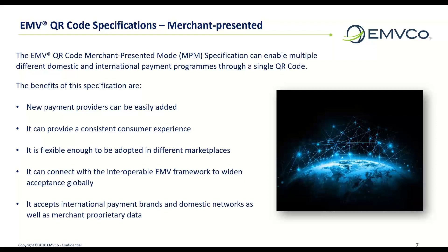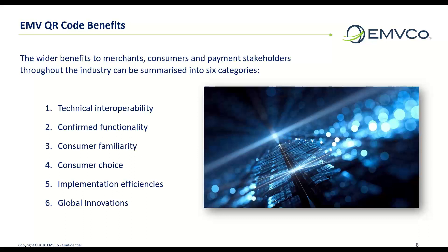It has been adopted by over 30 countries and has been adopted as a national standard by a third of these. The specific benefits of the standard are: new payment providers can be easily added to the QR code; this interoperable acceptance can provide a consistent consumer experience domestically and internationally; it is flexible enough to be adopted in any marketplace; and it can connect with the interoperable EMV framework to widen acceptance globally. A key benefit to merchants is having a single QR code that includes acceptance of international payment brands and domestic networks, as well as merchant proprietary data. The specifications can co-exist with proprietary offerings and support card-based solutions from domestic and international payment programs, as well as account-based, in a single QR code, and also align with other EMV specifications and technology.